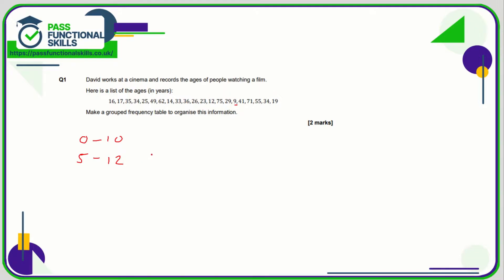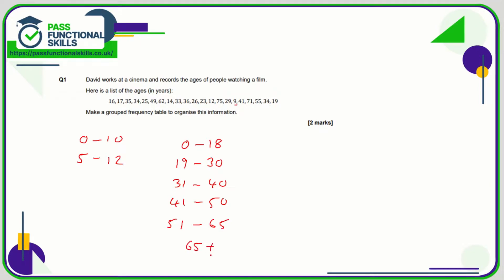Think about the context — what would be an appropriate age category? You could do zero to ten, eleven to twenty, twenty-one to thirty — groups of ten years. You don't want too many groups; you wouldn't do zero to five, six to ten, eleven to fifteen, because then there'll be lots of groups with zero in. Something sensible for ages might be zero to eighteen — that's quite a key age category — then nineteen to twenty-five or nineteen to thirty, thirty-one to forty, forty-one to fifty, fifty-one to sixty-five, and then a final one for anyone older than sixty-five. Then just work out how many people fit into each category.